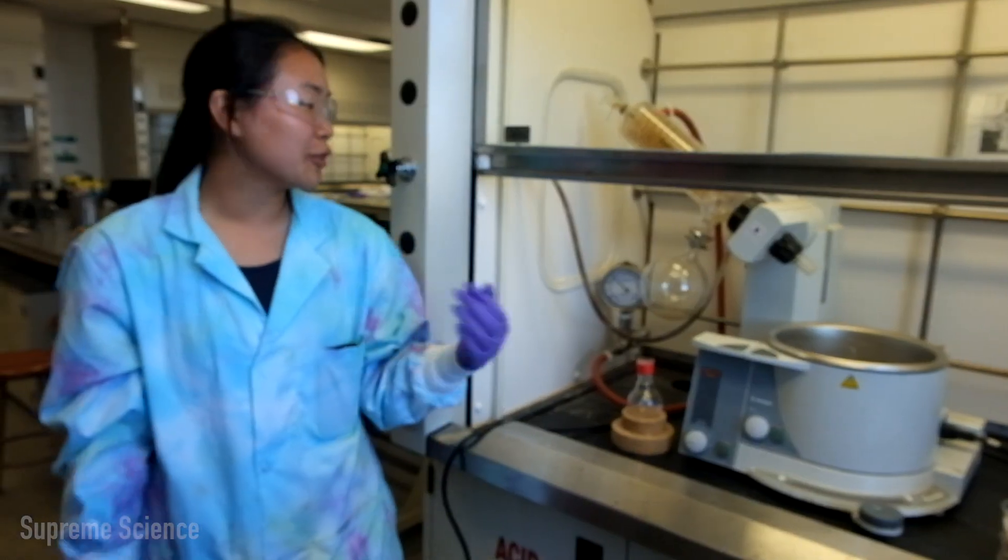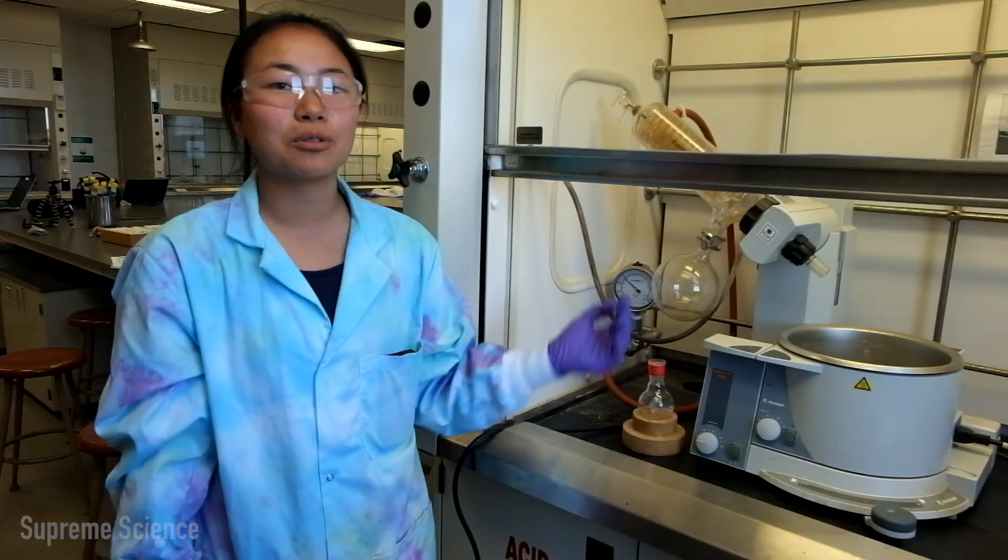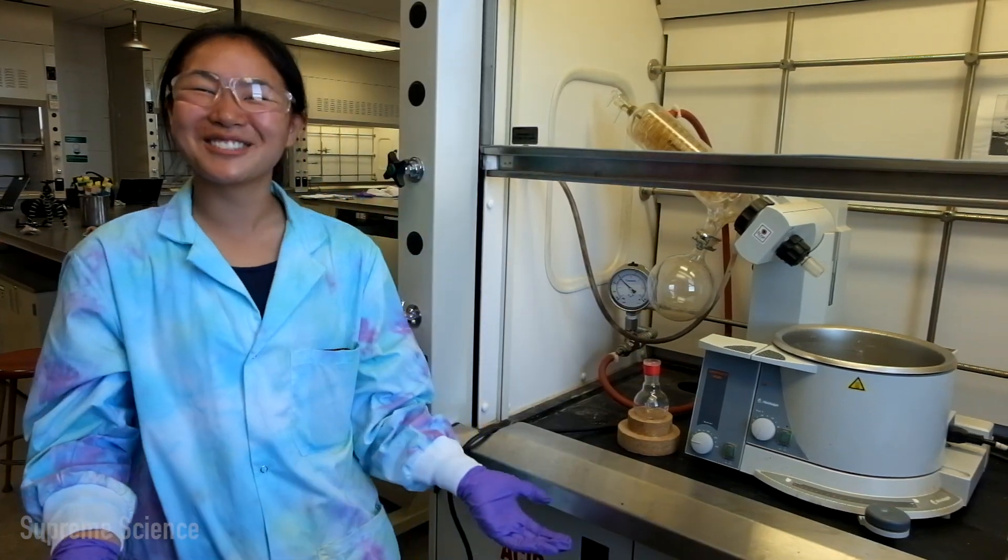Any solvent that you removed would be in this receiving flask. So you want to dispose of that properly in the correct waste disposal in the fume hood. And make sure to turn the water off. And that's how you use the rotovap.